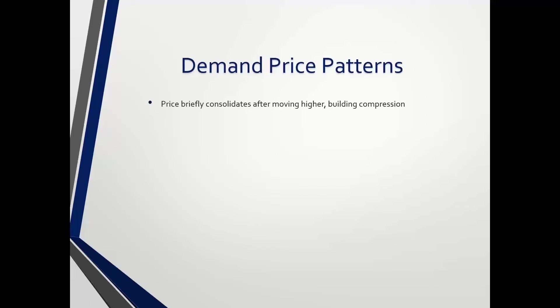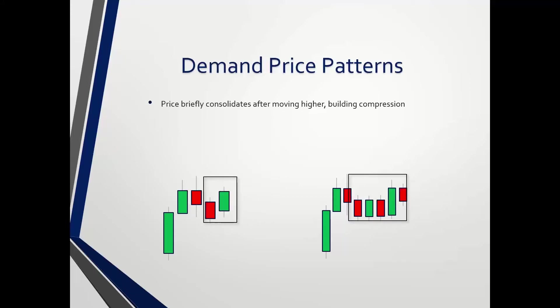In these demand patterns, price briefly consolidates after moving up. We can see price moving up, and as stated, it consolidates. Inside that consolidation — as shown in the rectangles — price begins to accumulate, specifically on the buy side. Demand being buy orders, supply being sell orders. Buy orders begin to accumulate inside of the consolidation. Some of this will make sense now; more will make sense towards the end of the session.